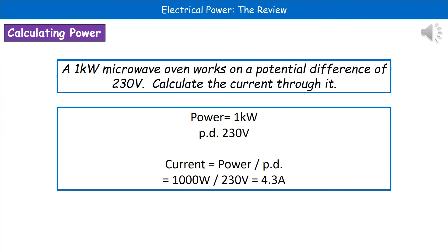An example of the kind of question we could get here: A one kilowatt microwave oven works on a potential difference of 230 volts. Calculate the current through it. First thing we do is write down what we know. The power is one kilowatt and potential difference is 230 volts.